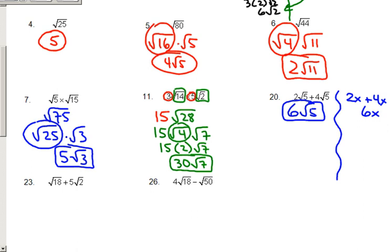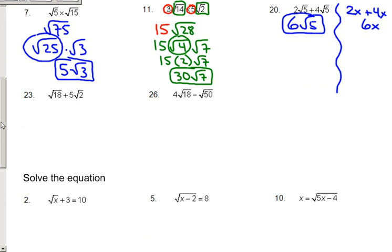You can always compare these very similarly to x's and y's. So on that same note, if I look at 23, if I pretend these were x's and y's, I would have x plus 5y, which we can't add together because they're not like terms. That means I've got to break something down.